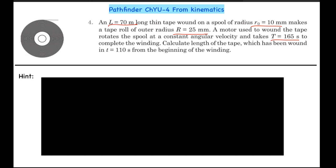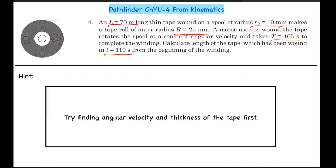Calculate length of the tape which has been wound in t equals 110 seconds from the beginning of the winding. If you want to try it yourself, you can do it now. If you want to look at the hint, here it is: try finding the angular velocity and the thickness of the tape first.